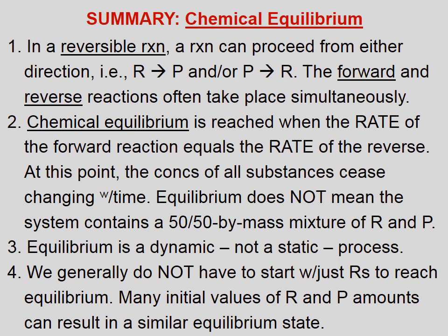Let's summarize chemical equilibrium. 1. In a reversible reaction, a reaction can proceed from either direction — reactants to products and/or products back to reactants — and the forward and reverse reactions often take place simultaneously. 2. Chemical equilibrium is reached when the rate of the forward reaction equals the rate of the reverse. At this point, the concentrations of all substances cease changing with time. Equilibrium does not mean the system contains a 50-50 by mass mixture of reactants and products. 3. Equilibrium is a dynamic, not a static, process. 4. We generally do not have to start with just reactants to reach equilibrium — many initial values of reactant and product amounts can result in a similar equilibrium state.